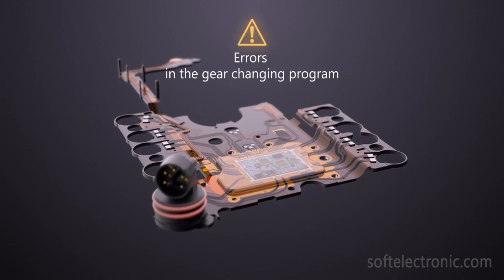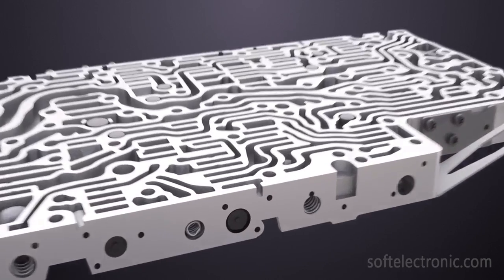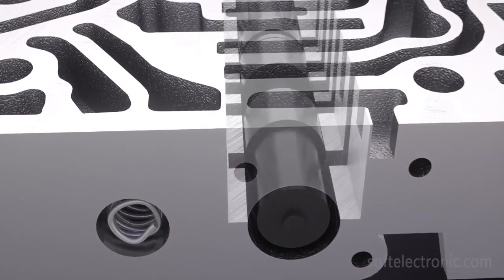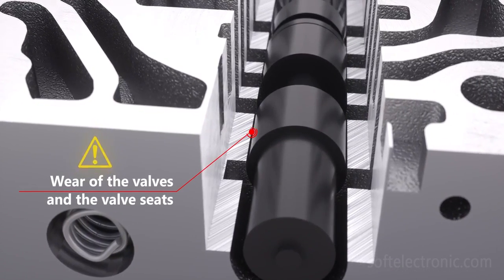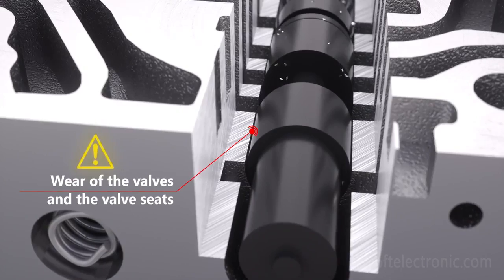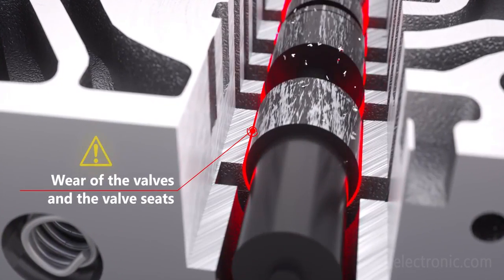Errors can appear in the software program of the gear change control due to incorrect data. The most common problem in the valve body is the appearance of gaps between the valve seats and the valves under normal wear. The presence of particles or elements not part of the composition of the transmission fluid can also lead to rapid wear.